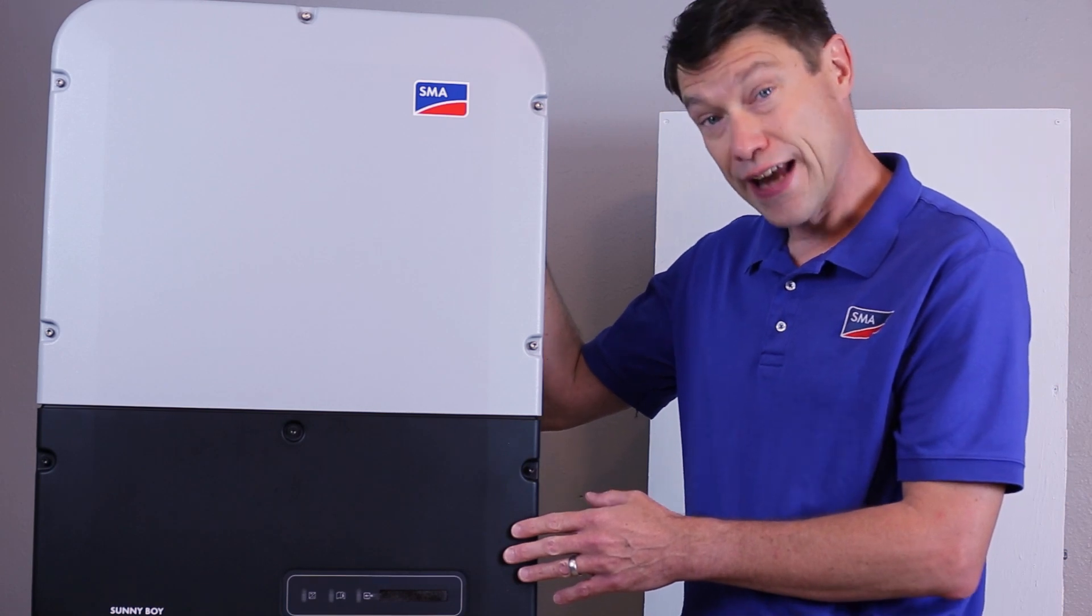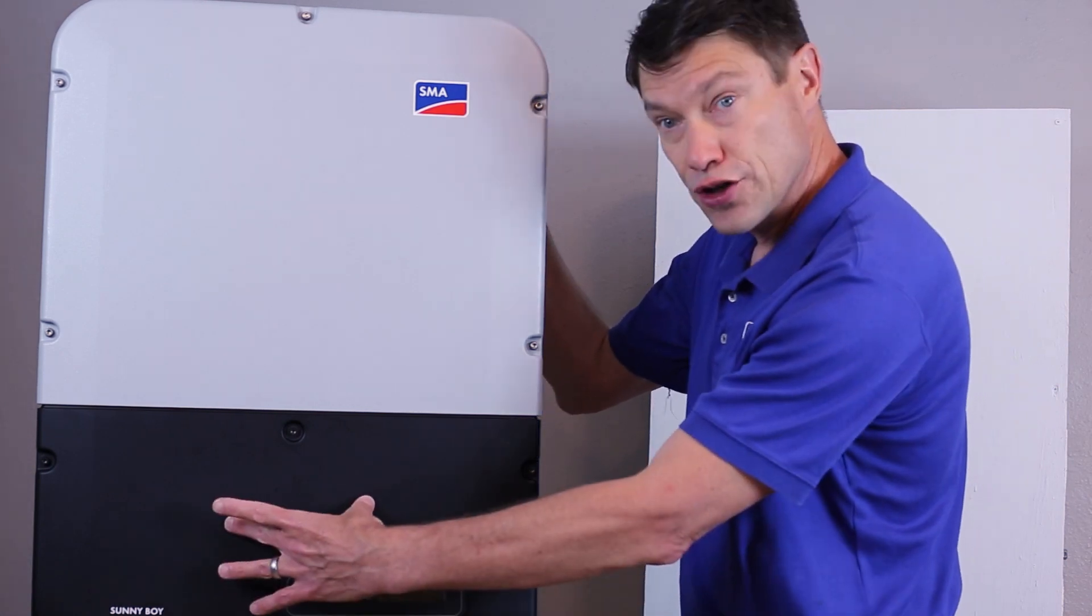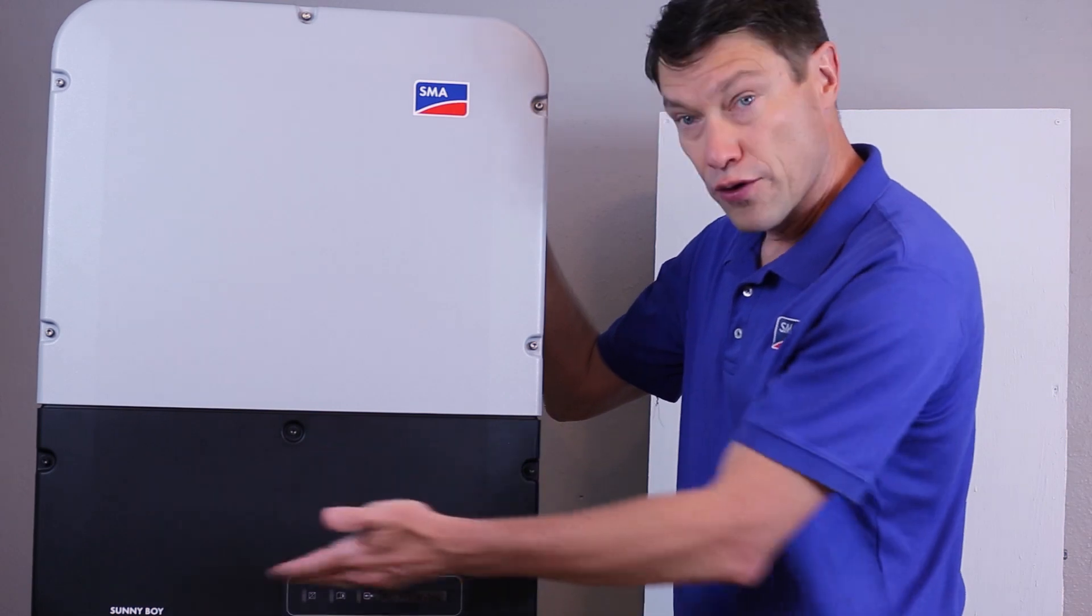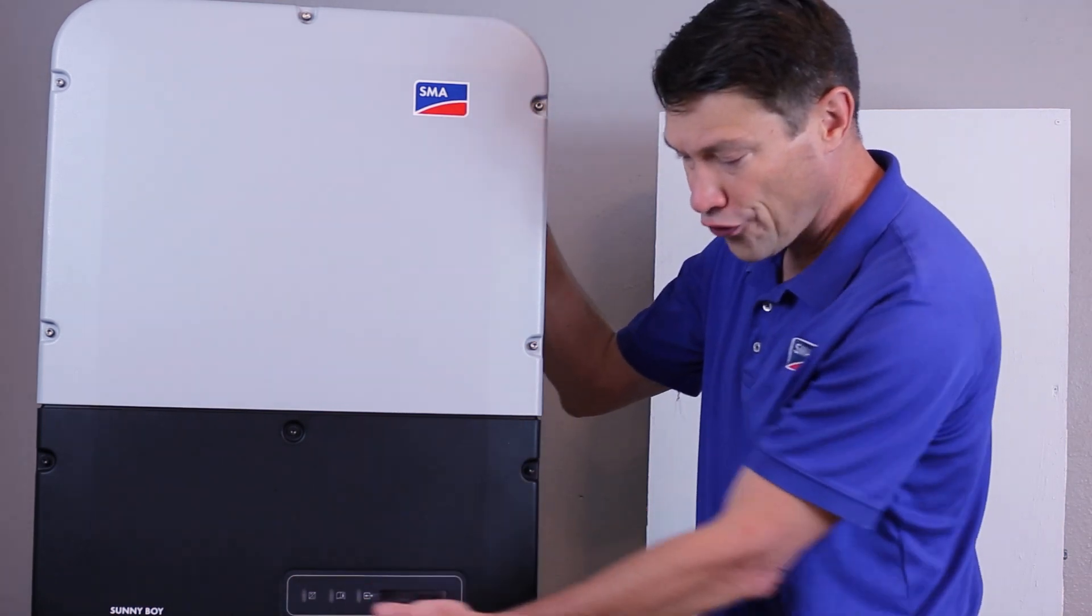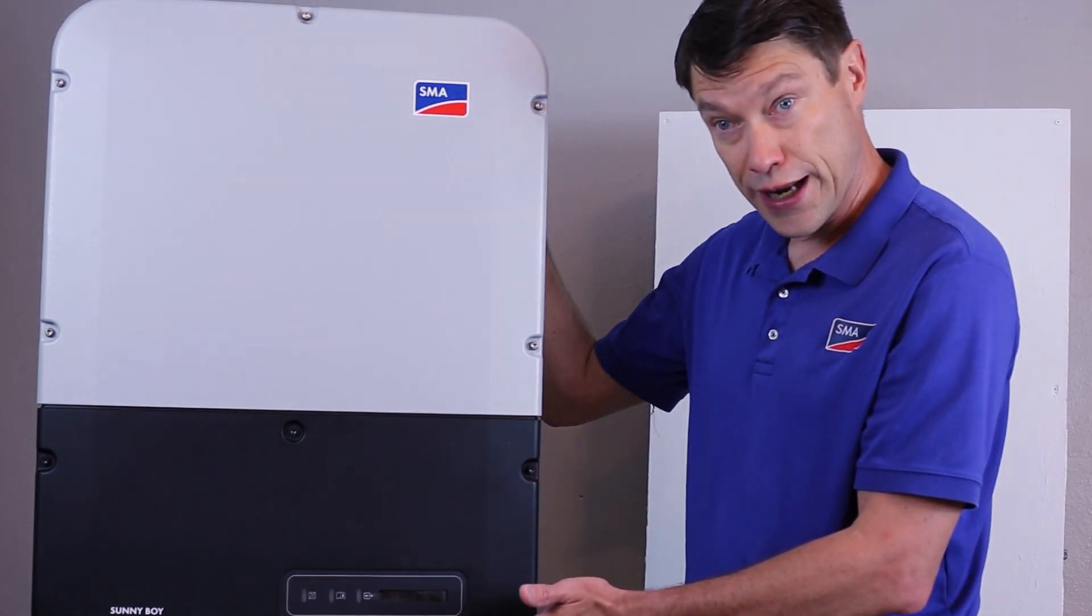The lower section behind the black lid is called the connection unit area. The communications board is front and center behind this lid. The remainder of the space is wiring area. You also see the display board on the front of the connection unit cover.